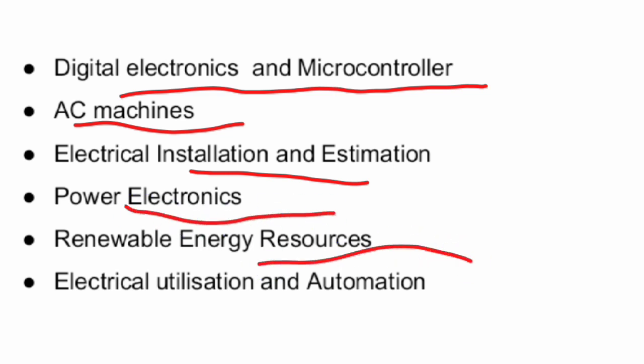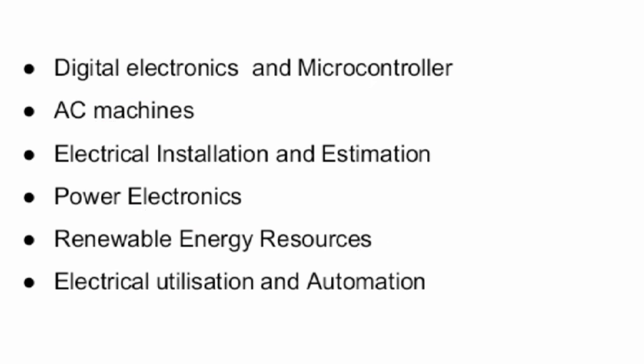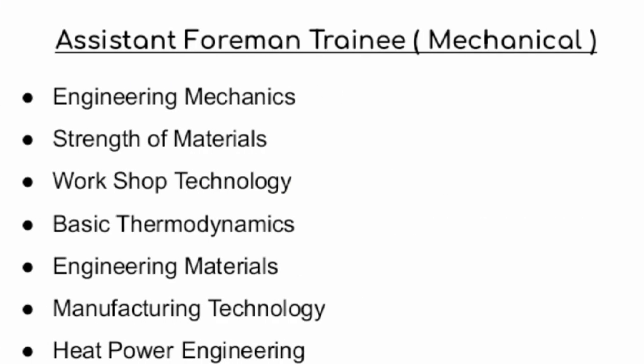Resources, Electrical Utilization and Automation are also included. Additionally, under General Studies: General English, Arithmetic, and Reasoning Aptitude questions are covered. 90% of the syllabus is compulsory for Assistant Foreman Electrical.